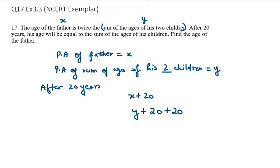So this is the age of father and the lower one is for sum of ages of his two children. It is x plus 20 and another is y plus 40.